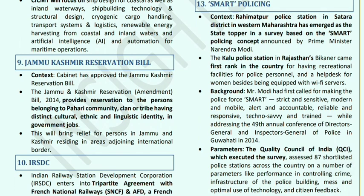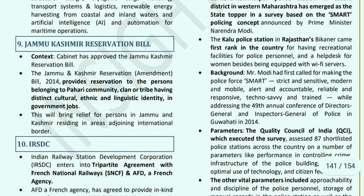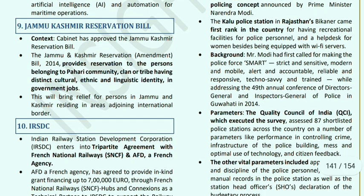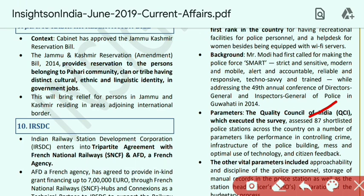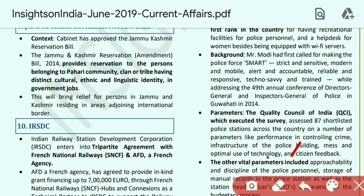The SMART policing parameters include: Strict, Sensitive, Modern and Mobile; Alert and Accountable; Reliable and Responsive; Techno-savvy and Trained. The concept was announced at the 49th Annual Conference of Director Generals and Inspector Generals of Police in Guwahati in 2014. Parameters evaluated include crime control, infrastructure, discipline, and storage of manual records. The Quality Council of India assessed 87 shortlisted police stations.